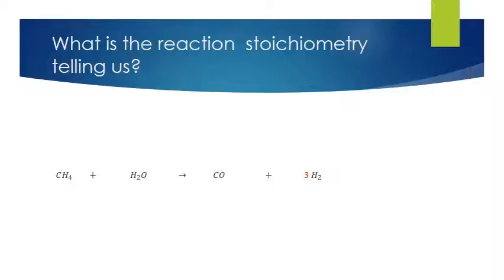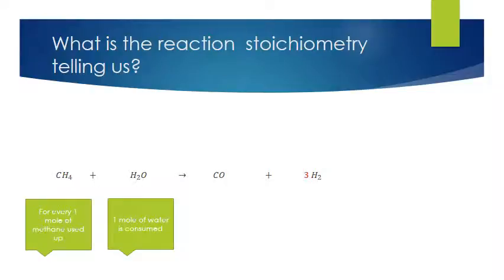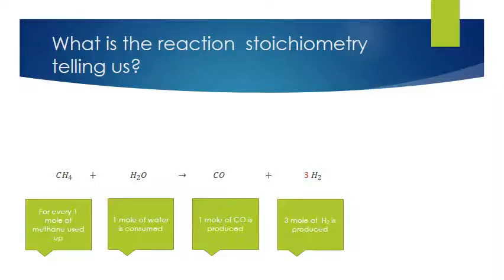In reactor design, what is the importance of stoichiometry? It tells us the proportions at which chemicals are changing. For example, in the steam reforming of methane — methane reacting with water to form CO and hydrogen — for every one mole of methane we use up, we also use one mole of water, produce one mole of CO, and produce three moles of hydrogen. This is very important when we have to relate the various numbers of moles of products and reactants when designing our reactor.